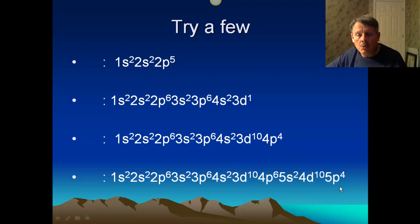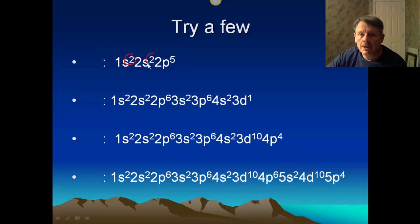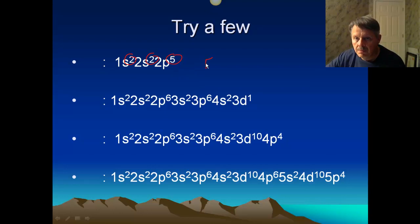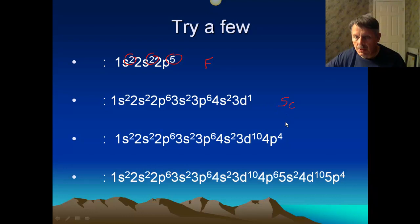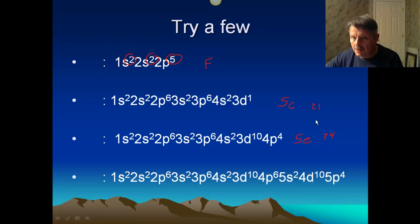What happens when you work backwards? All you have to do is count electrons. For example, 1S2, 2S2, 2P5 — that's two plus two plus five, totaling nine electrons — so that's fluorine. An ending of 3D1 with a total of twenty-one electrons is scandium. Ending in 4P4 with thirty-four electrons is selenium. And ending in 5P4 with fifty-two electrons is tellurium, Te.